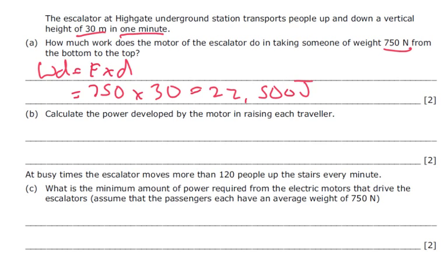Calculate the power developed by the motor as it raises each traveler. So the power is going to be work done divided by the time taken. It took one minute and we need this value to be in seconds so we're going to say 60. And we get a value of 375 watts.